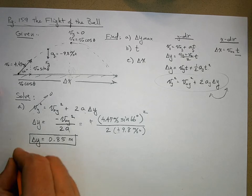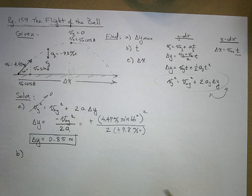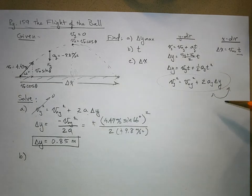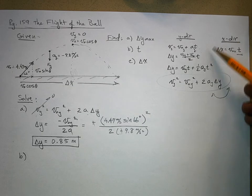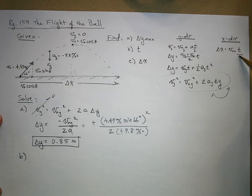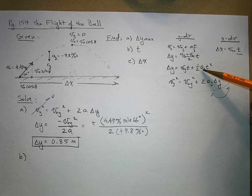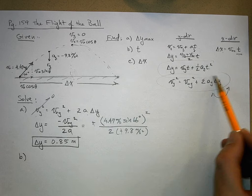For Part B, we want the total time the ball is in flight — from launch back to the launching height. I can't use delta_x = v_nx·t because I don't know delta_x yet. So I have to use one of the y-direction equations that contains time. I'm going to use the third one: delta_y = v_ny·t + ½·a_y·t².